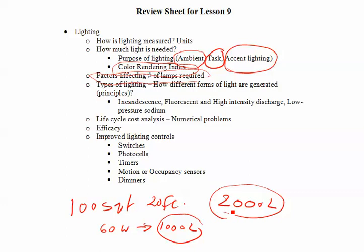Types of lighting: you need to know the differences between incandescence, fluorescence, and high intensity discharge lamps — how each produces light, the process involved, and the hardware that is involved.